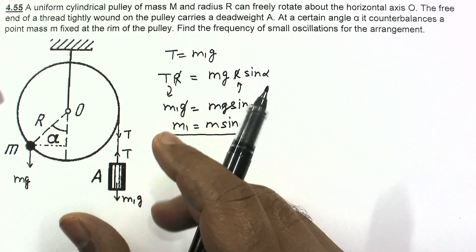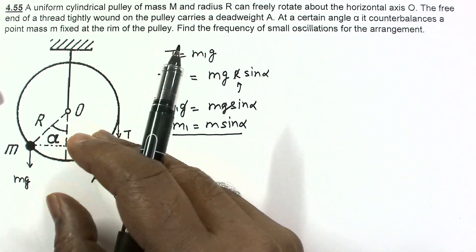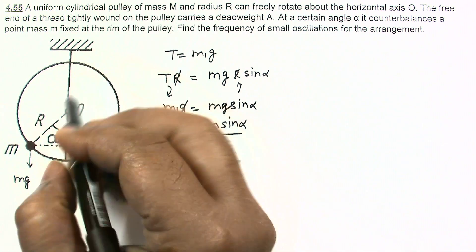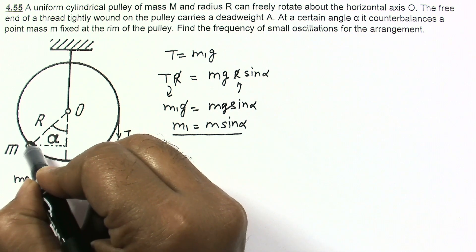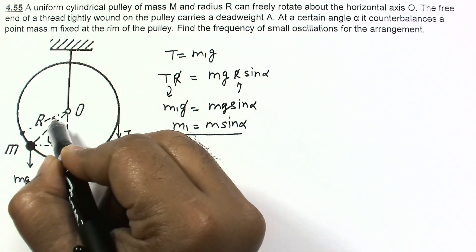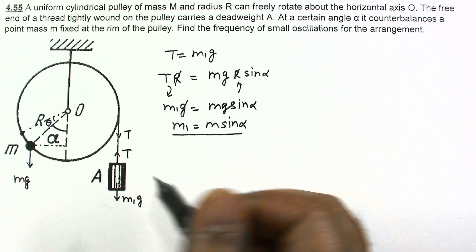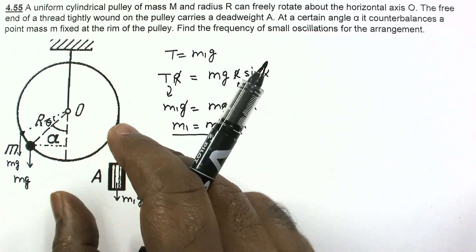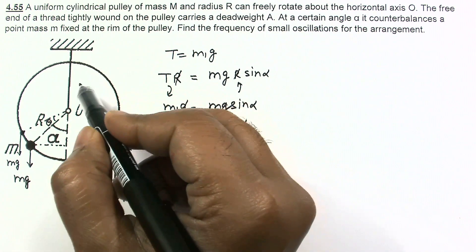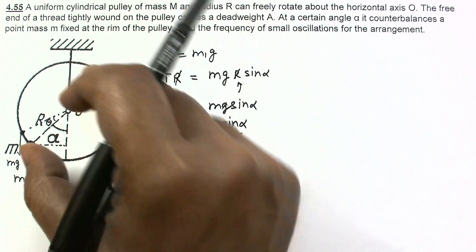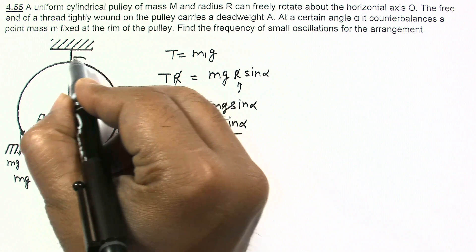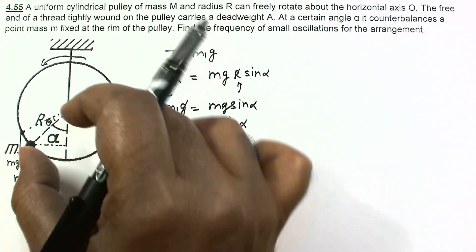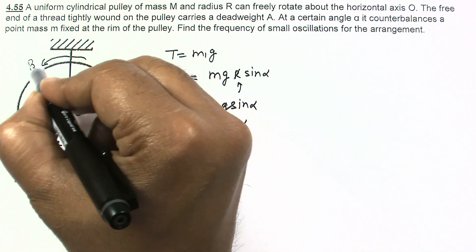To find the frequency of small oscillations, we rotate the pulley by a very small angle θ in the clockwise direction, so the mass moves to a new position. After releasing, we assume the angular acceleration β of the pulley is in the anticlockwise direction, which will tend to bring the mass back to its equilibrium location.